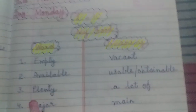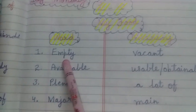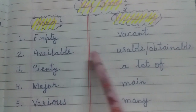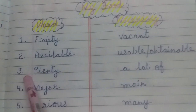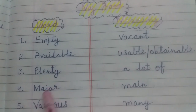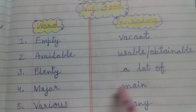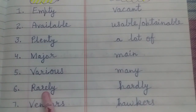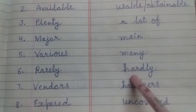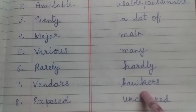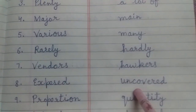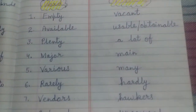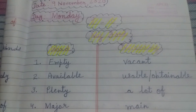Let's read all word meanings again. First word: empty, meaning vacant. Second word: available, meaning usable or obtainable. Third word: plenty, meaning a lot of. Fourth word: measure, meaning main. Fifth word: various, meaning many. Sixth word: rarely, meaning hardly. Seventh word: vendors, meaning hawkers. Eighth word: exposed, meaning uncovered. Ninth word: proportion, meaning quantity. Tenth word: injured, meaning damaged.